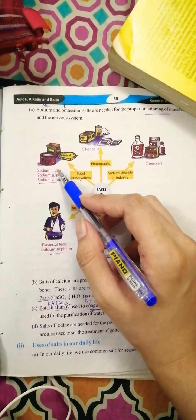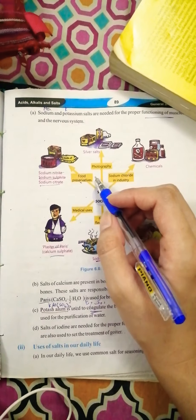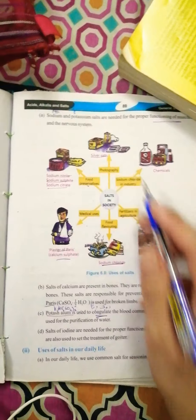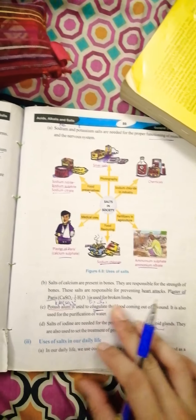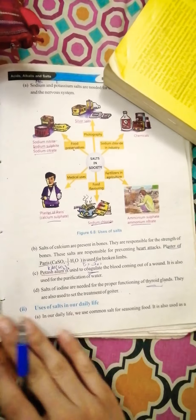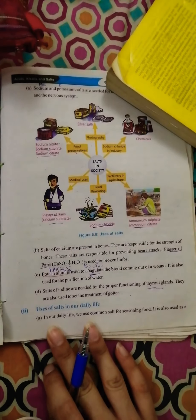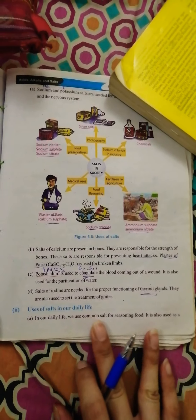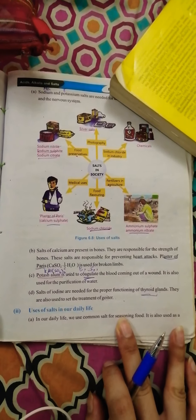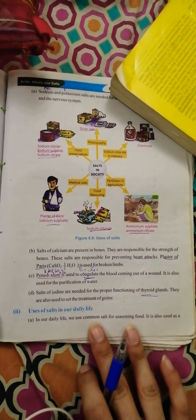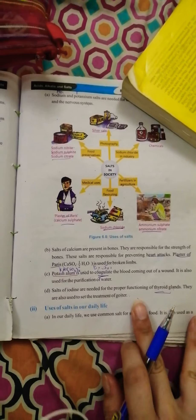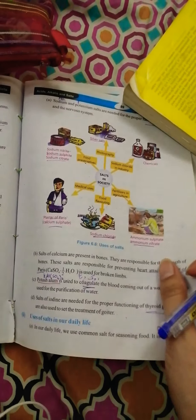In photography you can use silver salts. In society, in our daily life we use common salts for seasoning the food. It is also used as food flavoring. In our daily life we use sodium fluoride which is used for seasoning and flavoring food.